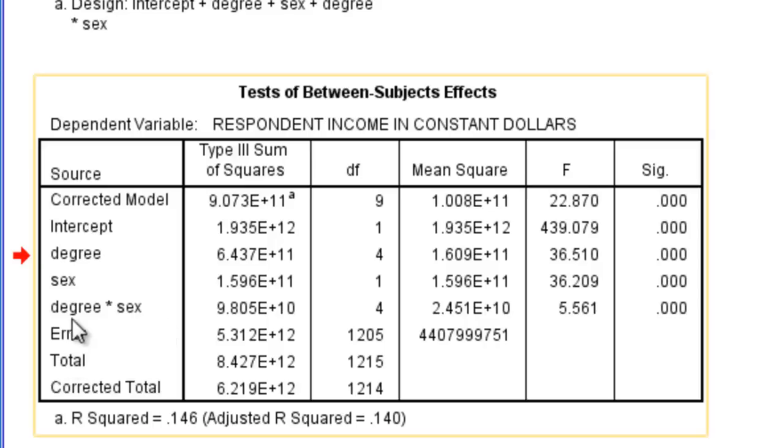When I look at the interaction effect, that's degree by sex. And when I move across this row, I can see that that is statistically significant because this p-value is less than my alpha value of 0.025. That's what I want to report. That's what I should be following up.